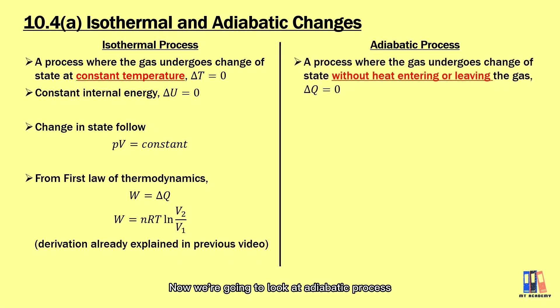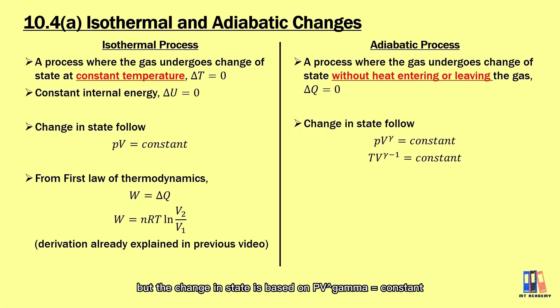Now we're going to look at adiabatic process. It is a process where the gas undergoes the change of state without the heat entering or leaving the gas that delta Q is equal to zero. For here, you do not need to learn about the derivation, but the change in state is based on PV to the power of gamma as constant where gamma is the ratio of molar heat capacity.